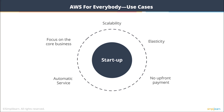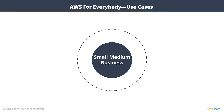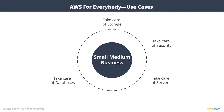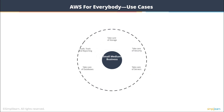If you are a small or medium business, you probably don't have a large team to take care of storage, security, servers, and databases. AWS gives you a host of managed services to handle all of those things. You have a budget and you don't want to spend more than that. You want to know what is going in and out of your network. AWS gives you tools to audit, track, and budget your monthly costs.